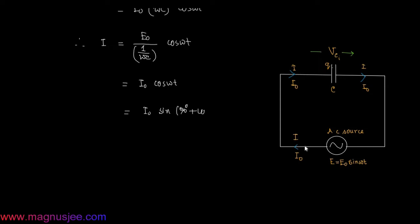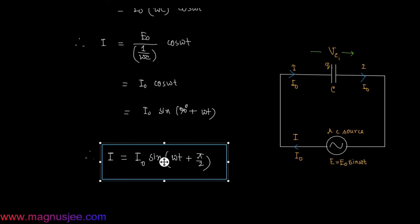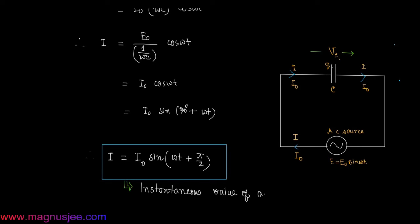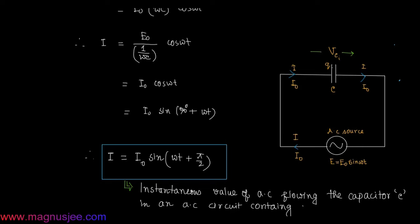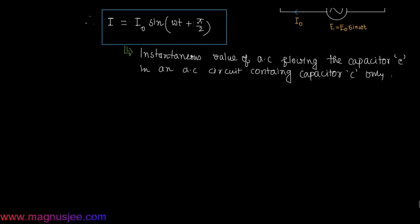Since cos(ωt) = sin(90° + ωt), we get i = i0·sin(ωt + π/2). This is the instantaneous value of alternating current flowing through the capacitor of capacitance C connected to the AC source of EMF e = e0·sin(ωt), in an AC circuit containing capacitor only.